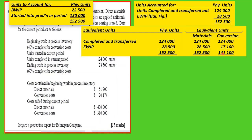Adding down, we get 152,500 total equivalent units for materials and 141,100 for conversion. The materials column equals the physical units total only because 100% of materials are introduced at the start. These two columns are separate figures and adding them together does not produce a meaningful total.